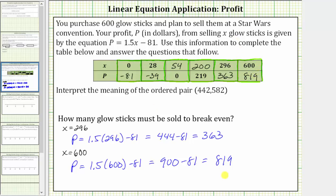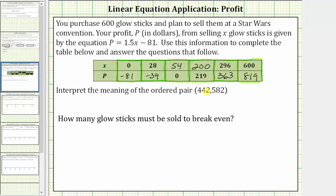Now let's answer the questions. Interpret the meaning of the ordered pair (442, 582). The first value of the ordered pair is X and the second value is P. The meaning of this ordered pair is: if you sell 442 glow sticks, the profit will be $582.